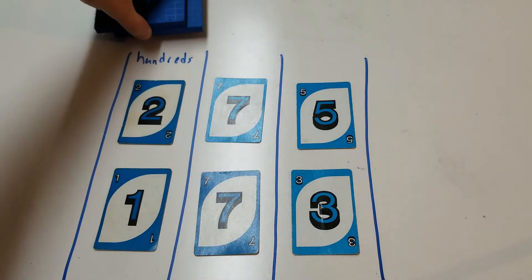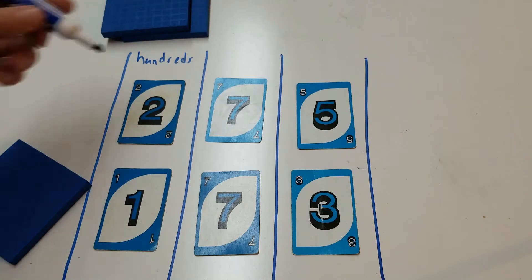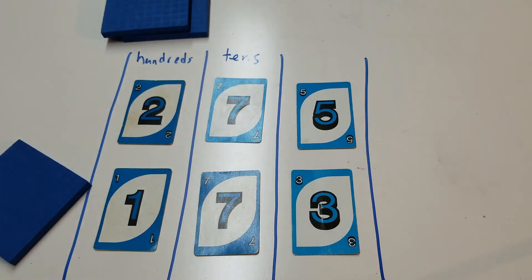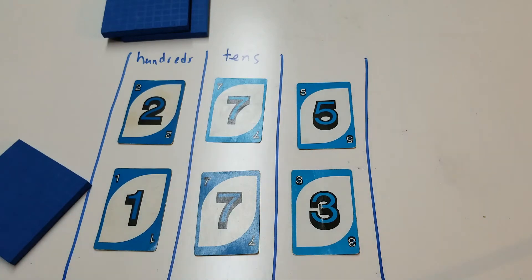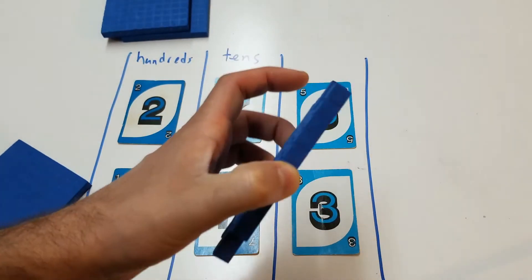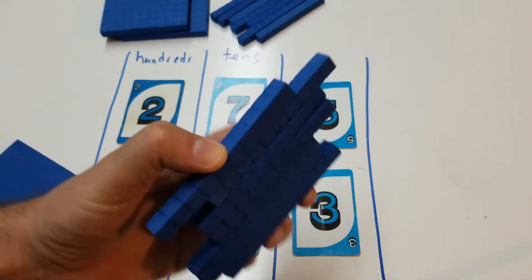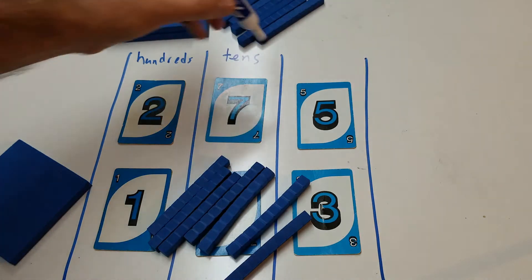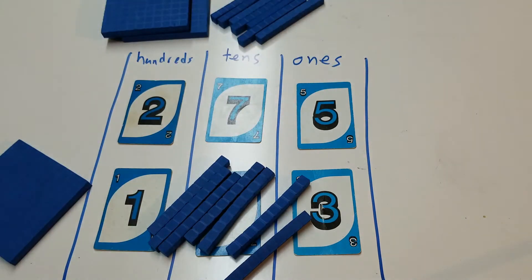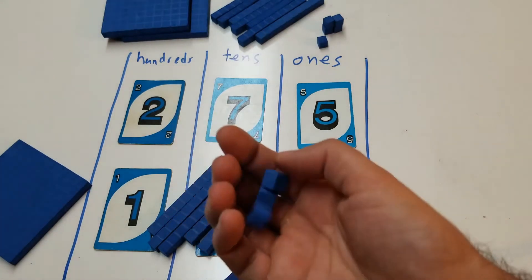Here I have an additional 100. We'll put that here. This middle column represents the tens, so each of these seven represents seven groups of 10, which is the same as 70. I have right here seven 10-blocks — that's 70. And here's an additional 70. This last column represents the ones — this is probably the easiest because these ones are just individuals. So that five represents five ones and this three represents three more ones.